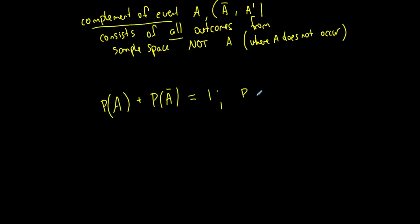So represented in decimal form, the sum of it will be one or, in percentage form, the sum of that will be a hundred percent. Sum of any event and its complement, their corresponding probabilities should add up to one or one hundred percent.